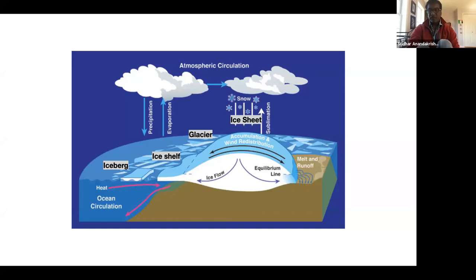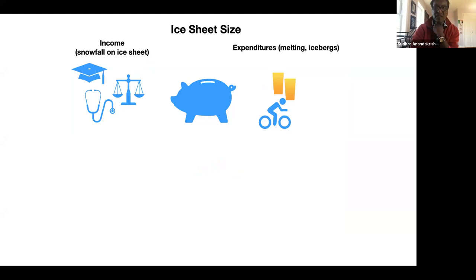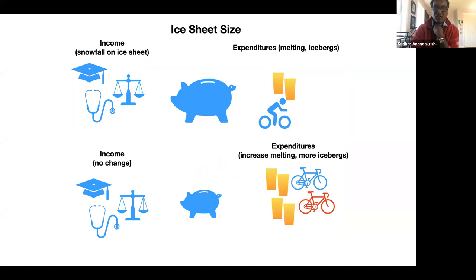The ice sheet size is really a balance between what I call income and expenditures. You get snowfall on the ice sheet, and melting and iceberg calving on the other side. If there's no change in snowfall but there is an increase in melting or iceberg calving - if your expenditures go up - then the ice sheet shrinks. And because of this dance between ice sheets and sea level, sea level rises. Very straightforward.